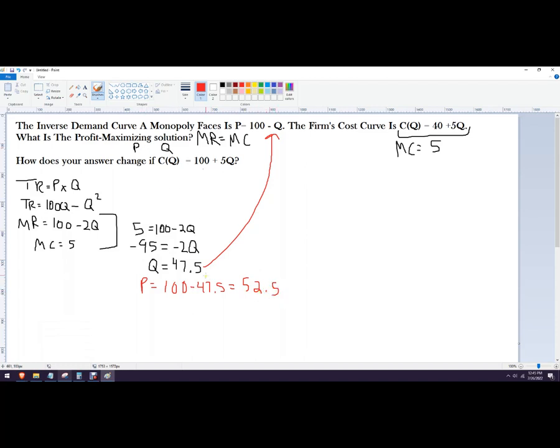So 52.5 is the price, and 47.5 is the quantity. That's the answer. How does our answer change if this is our total cost? So this is a, if you look at this, this one and this one,